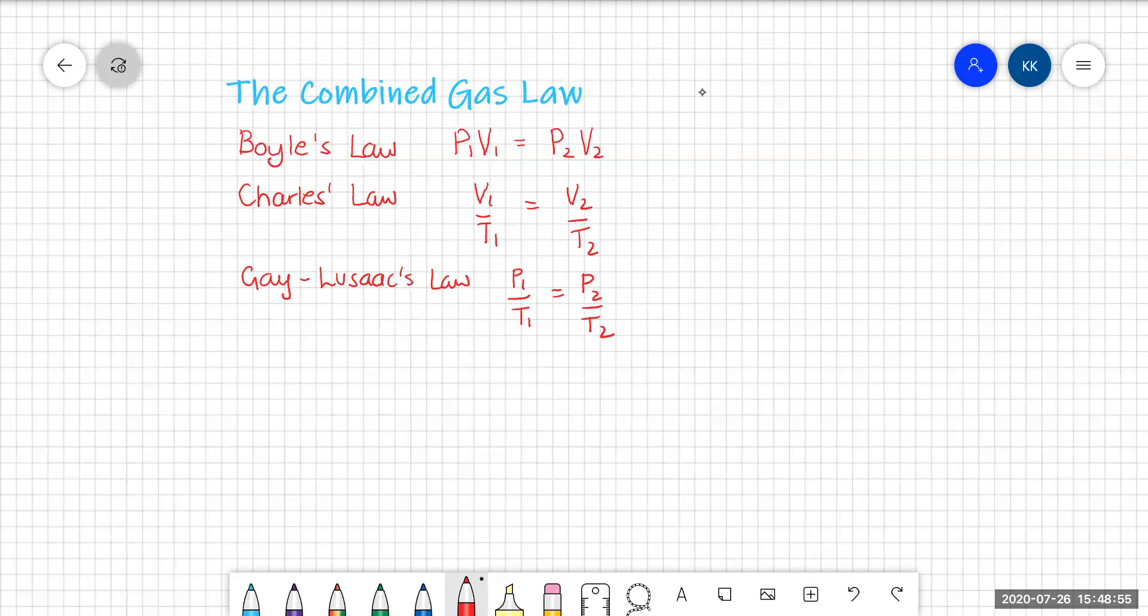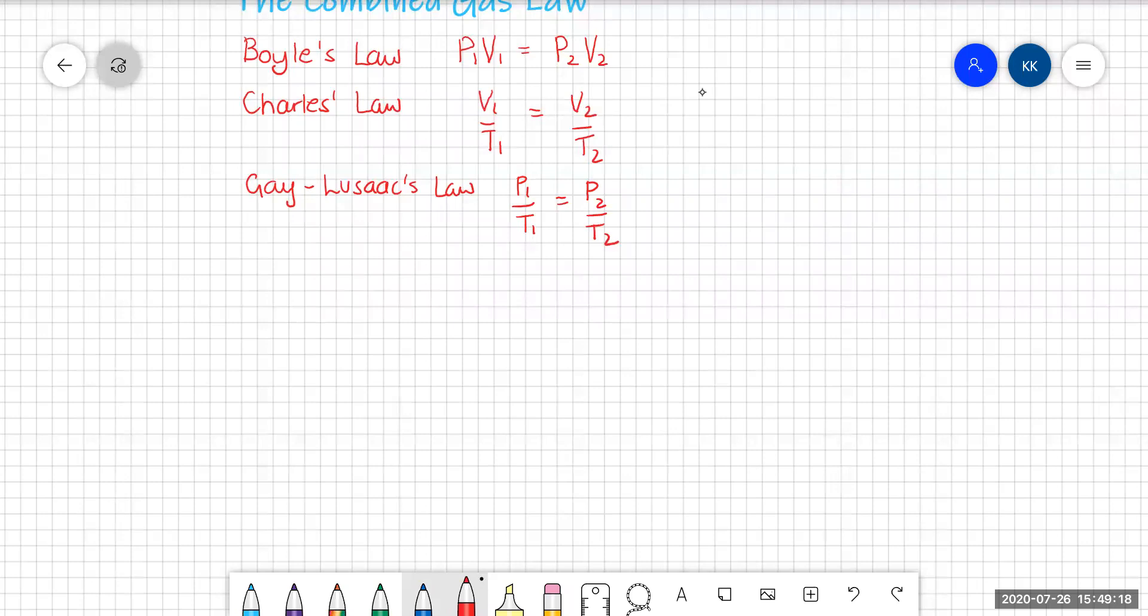So we know all three of those are true. They've been established by experiment and they are laws. Let's have a look if we multiply P1V1 by V1 on T1 by P1 on T1. Let's do a little algebra. I love some algebra. So if we do Boyle's law and we multiply that by Charles law and we multiply that by Gay-Lussac's law.